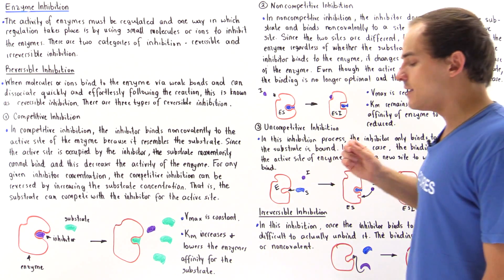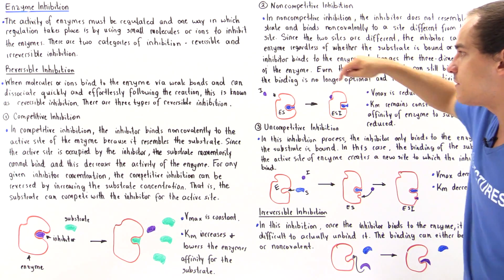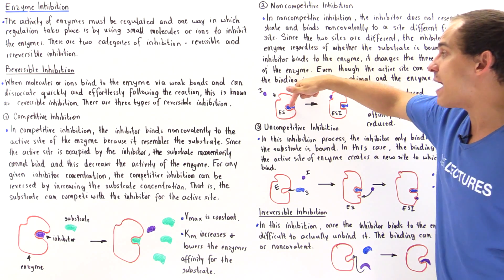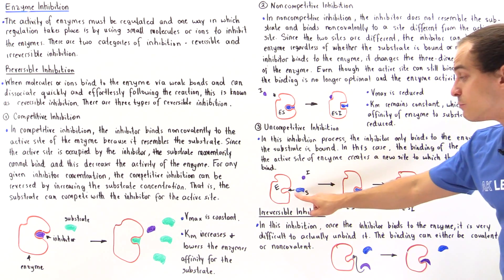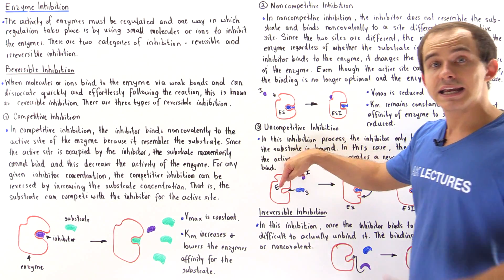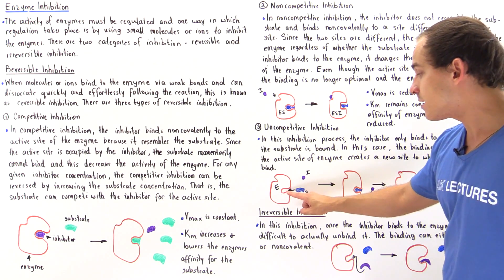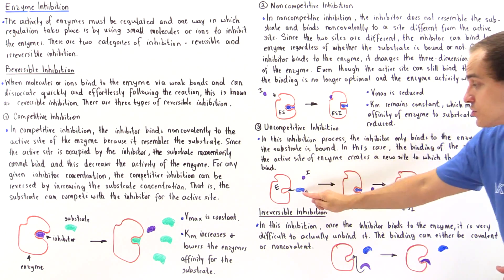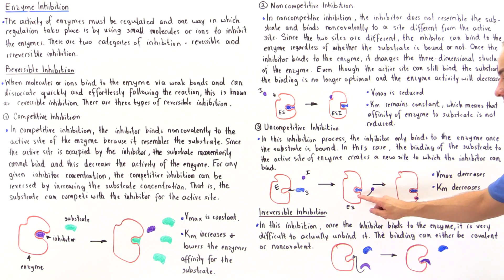Finally, let's move on to uncompetitive inhibition. The major difference between non-competitive and uncompetitive is that in non-competitive, the inhibitor can bind to the allosteric site regardless of whether the enzyme is bound to the substrate or not. But in uncompetitive, the inhibitor can only bind to a site on the enzyme when the substrate actually binds to the active site first. When the substrate binds to the active site, only then do we create that site for the inhibitor, shown in purple, which can then bind to form the enzyme-substrate-inhibitor complex.